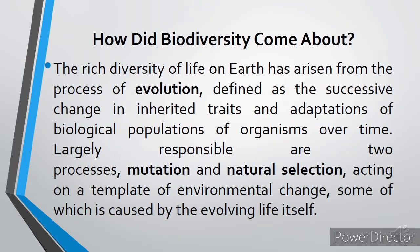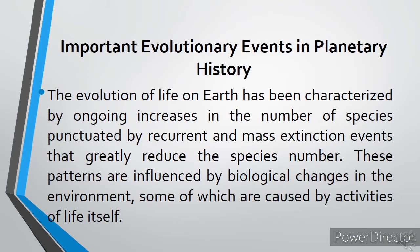How did biodiversity come about? The rich diversity of life on Earth has arisen from the process of evolution, defined as a successive change in inherited traits and adaptations of biological populations of organisms over time. Largely responsible are two processes — mutation and natural selection — acting on a template of environmental change, some of which is caused by the evolving life itself. The evolution of life on Earth has been characterized by ongoing increases in the number of species, punctuated by recurrent mass extinction events that greatly reduce species numbers.